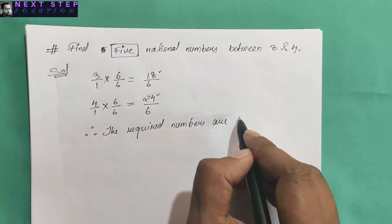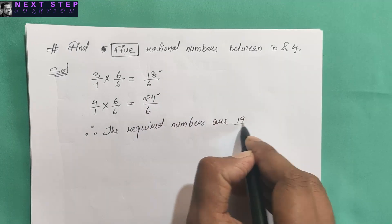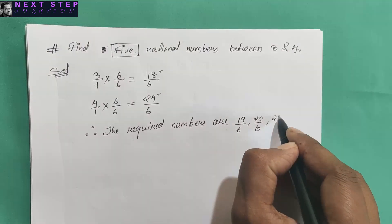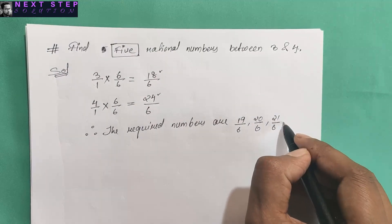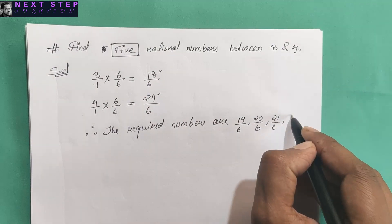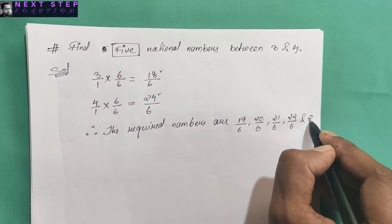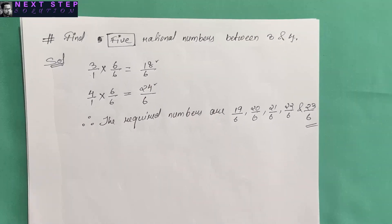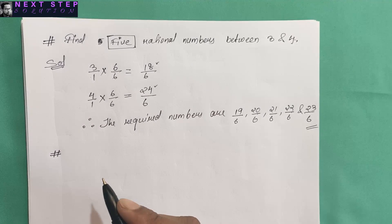Between 18 and 24 we have the five required numbers. Therefore the required numbers are 19 by 6, 20 by 6, 21 by 6, 22 by 6, and 23 by 6.